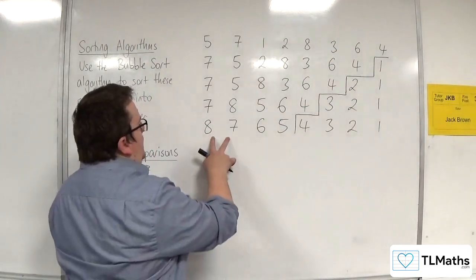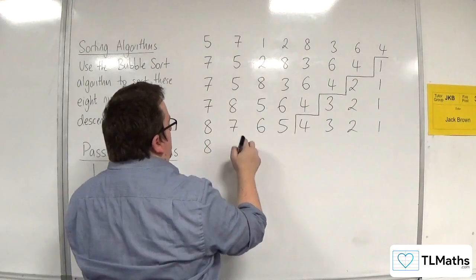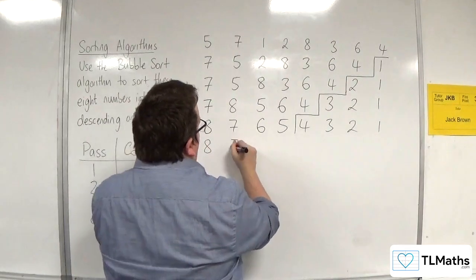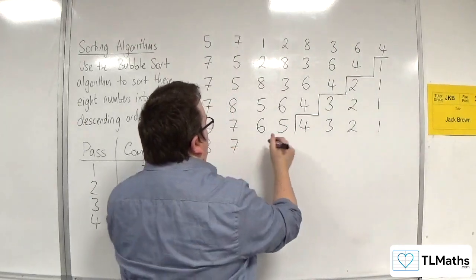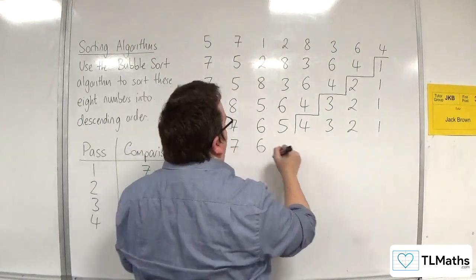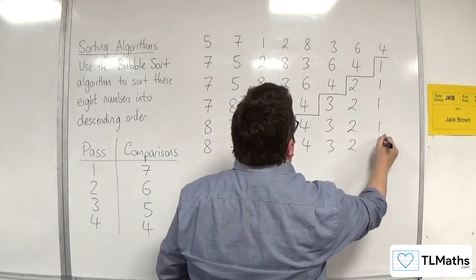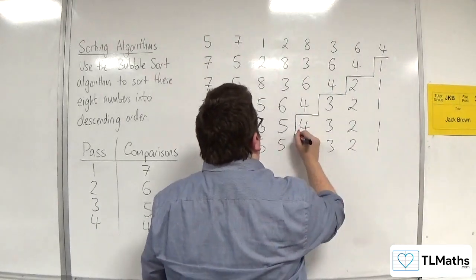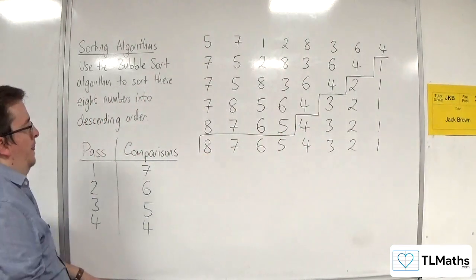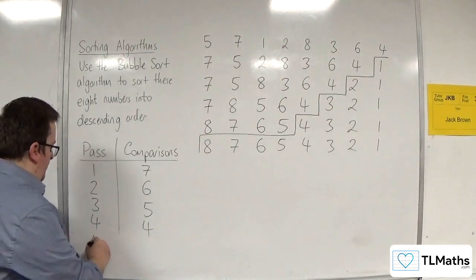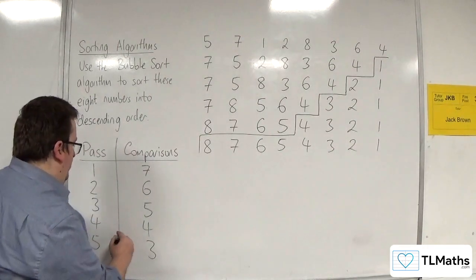Eight and seven are compared — eight is larger than seven. Seven and six are compared — seven is larger than six. Six and five are compared — six is larger than five. Five has bubbled to the top. But because there were no swaps, we can cap off the rest. So in the fifth pass, we made three comparisons.